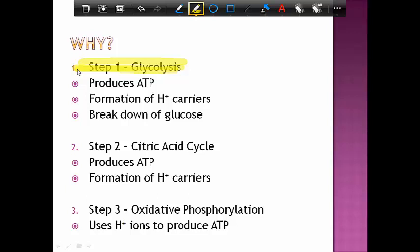We are just going to be looking at step one glycolysis. The goals of glycolysis are to make some ATP, but just a small amount, to make these hydrogen ion carriers, or molecules that have extra hydrogen ions attached to them, and start the beginning of the breakdown of glucose.